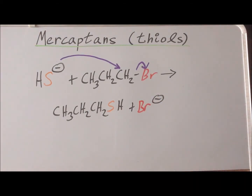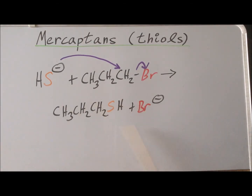Recall that bromide is the best leaving group here — somewhat paradoxically, not because it's the strongest base, but because it is the most polarizable. It helps stabilize the transition state because, being a very large atom with lots of electrons, the electron cloud can be easily moved in the electric field. So it's the polarizability of bromine that makes it a superior leaving group to chlorine, which makes it superior to fluoride. Please see the following computed structures for the SN2 nucleophilic attack of hydrogen sulfide ion on various 1-halopropanes.